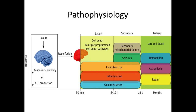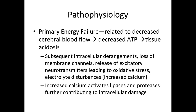The following illustration models the pathophysiology by which hypoxic ischemic injury occurs. In brief, decreased oxygen delivery followed by reperfusion leads to a cascade of events that ultimately results in cell death, excess inflammation, and oxidative stress. HIE can be divided into two phases. The first phase is characterized as primary energy failure, related to decreased cerebral blood flow leading to decreased ATP and ultimately tissue acidosis. Subsequent intracellular derangements include loss of membrane channels and a release of excitatory neurotransmitters leading to oxidative stress and electrolyte disturbances such as hypercalcemia.